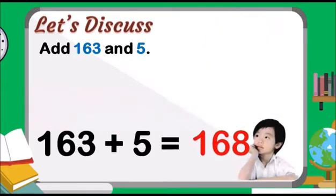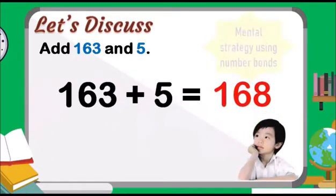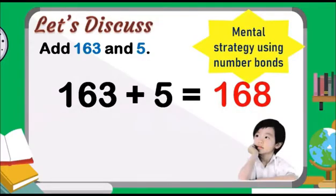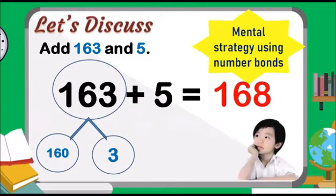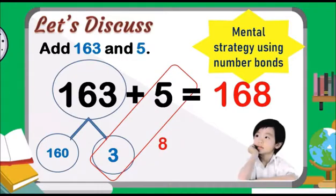We can also add these numbers by using a mental strategy with number bonds. Let us split 163 into 160 and 3. Let us add the ones: 3 and 5 will get 8. Then, let us add 160 and 8 to get 168.